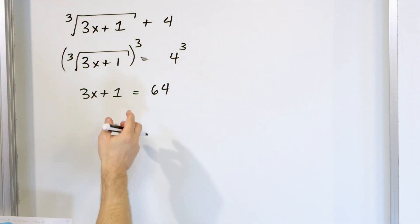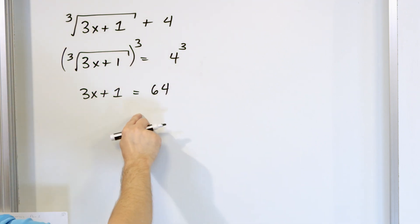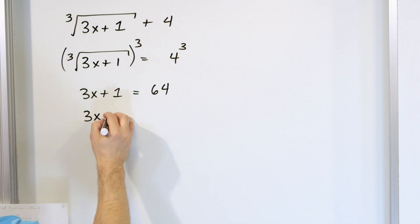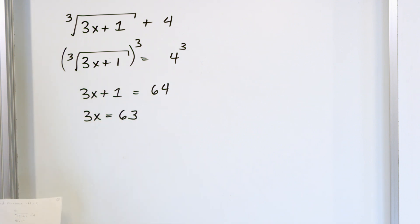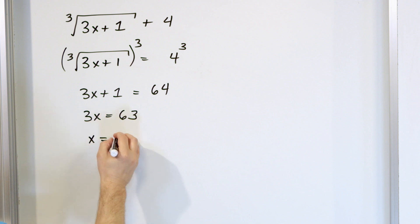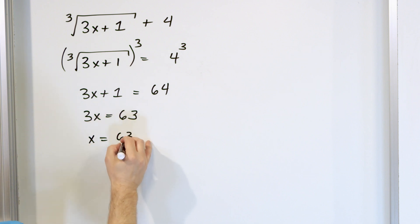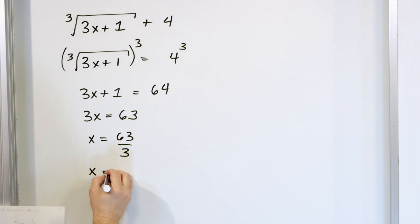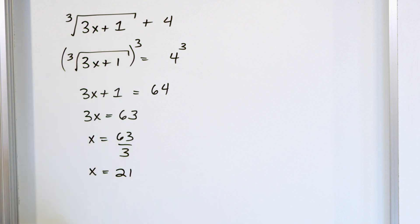Now you solve this as usual. Subtract the 1, you'll get 3x is equal to 63. Then when you solve for x, you'll divide by 3, you'll get 63 over 3, which means you're going to get 21. 63 divided by 3 is a whole number — it's 21.